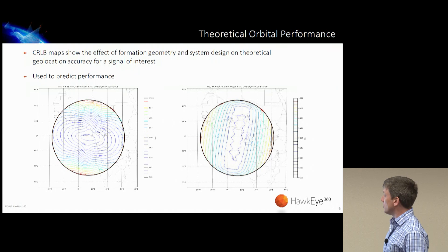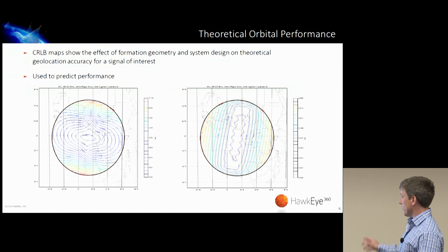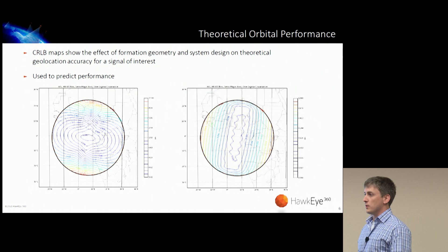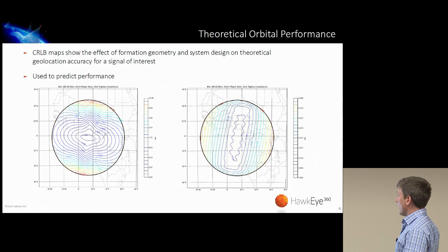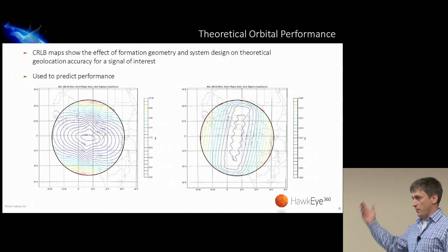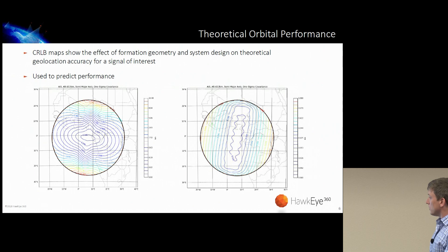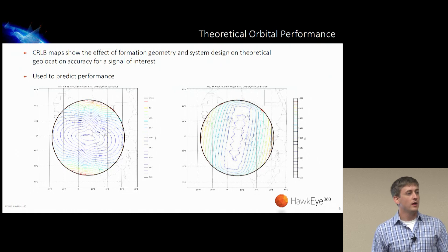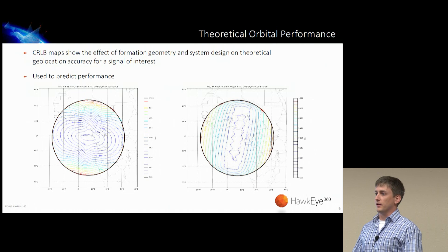We're showing two orbital performance estimates of our constellation. On the left, we've got a single pulse — the best case scenario from a single AIS emitter captured on our cluster of satellites. On the right, if a ship transmits multiple pulses and we orbit past it — a pass is about 10 minutes in low Earth orbit — receiving 10 pulses, the theoretical best case is about a couple hundred meters. We use this theoretical analysis to guide our performance expectations and verify our algorithms.